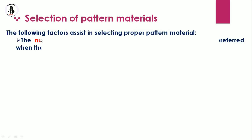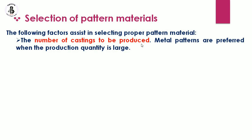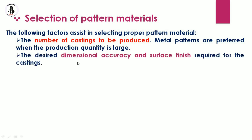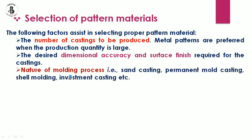Now, the important part — selection of pattern materials. The number of castings to be produced matters: whether it is single piece production, batch production, or mass production determines which kind of production method is used. Metal patterns are preferred when production quantity is large. For mass production, we prefer metallic materials as the pattern material. Desired dimensional accuracy and surface finish required for the castings also influence selection.